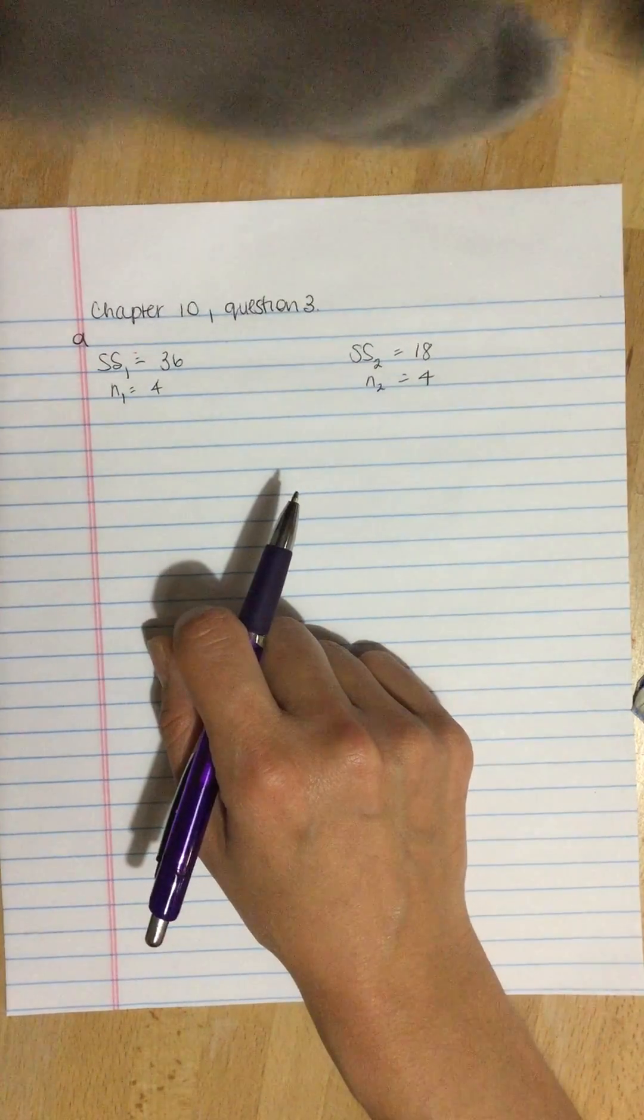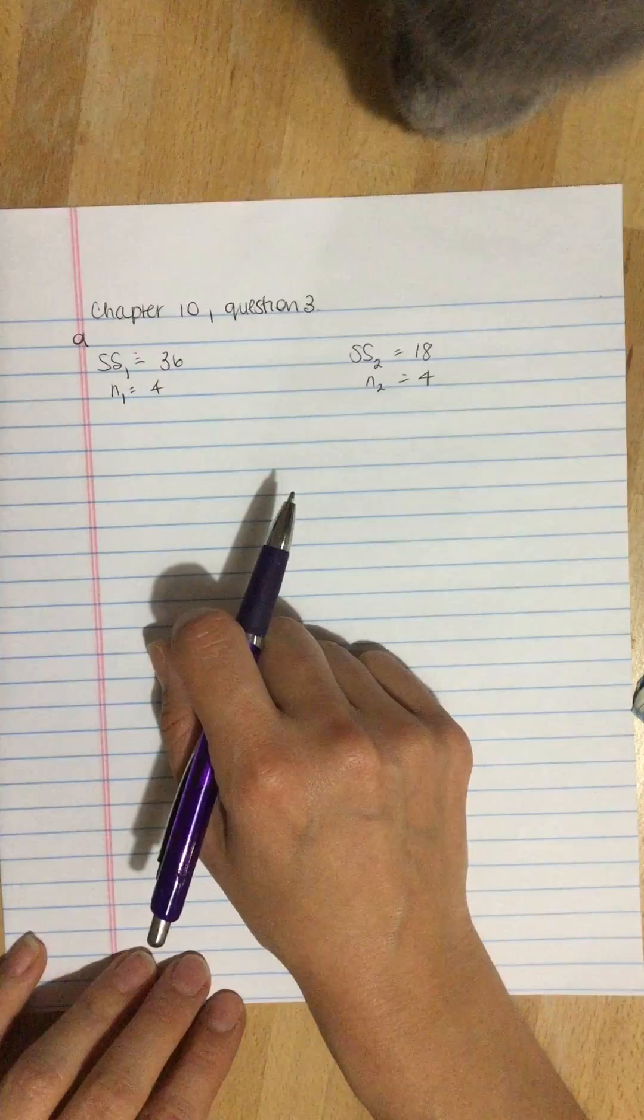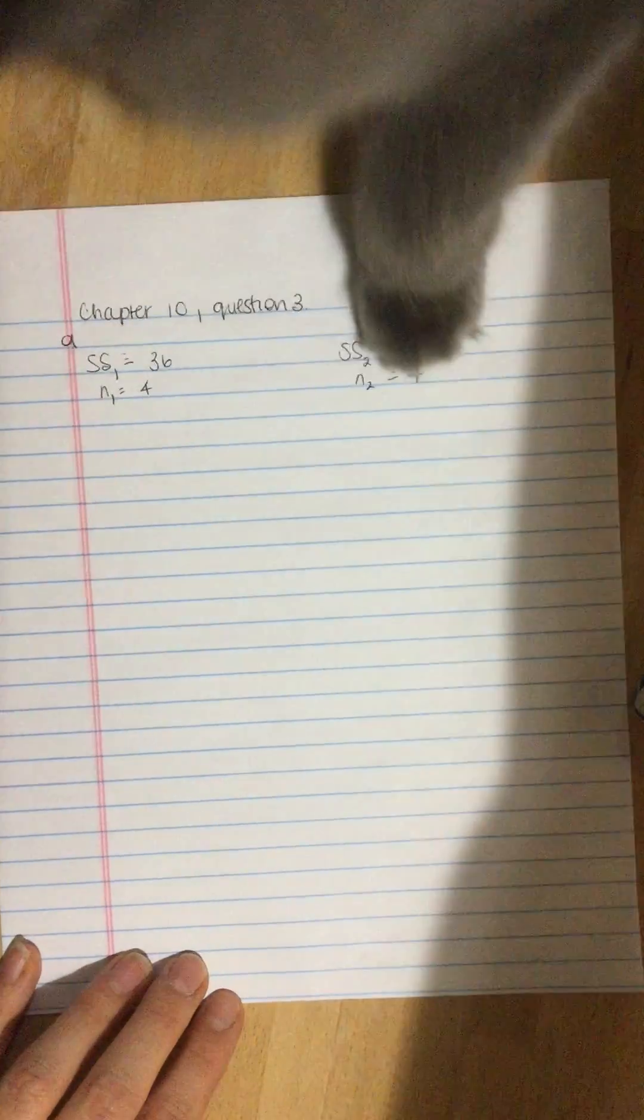Because the sample sizes are the same, you should find that the pooled variance is exactly halfway between the two sample variances.